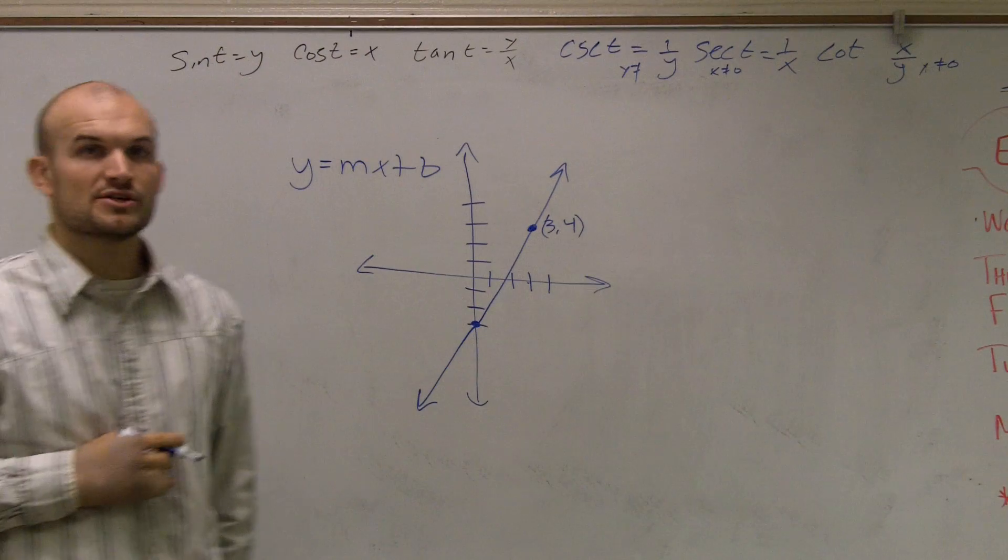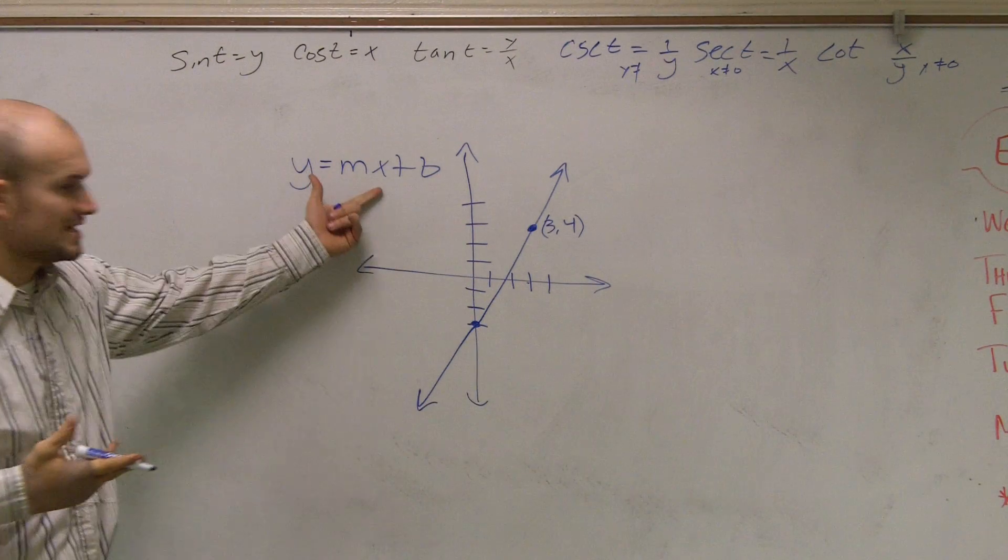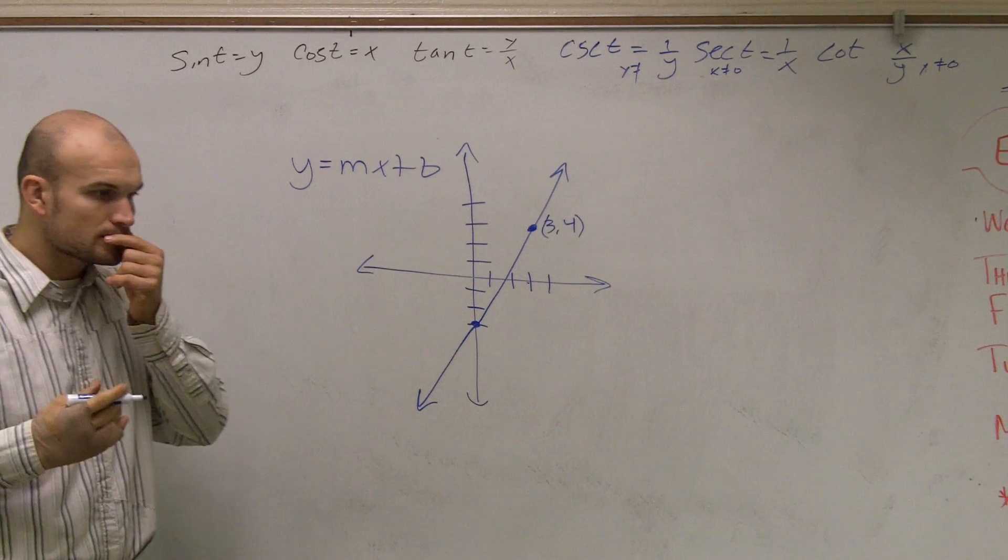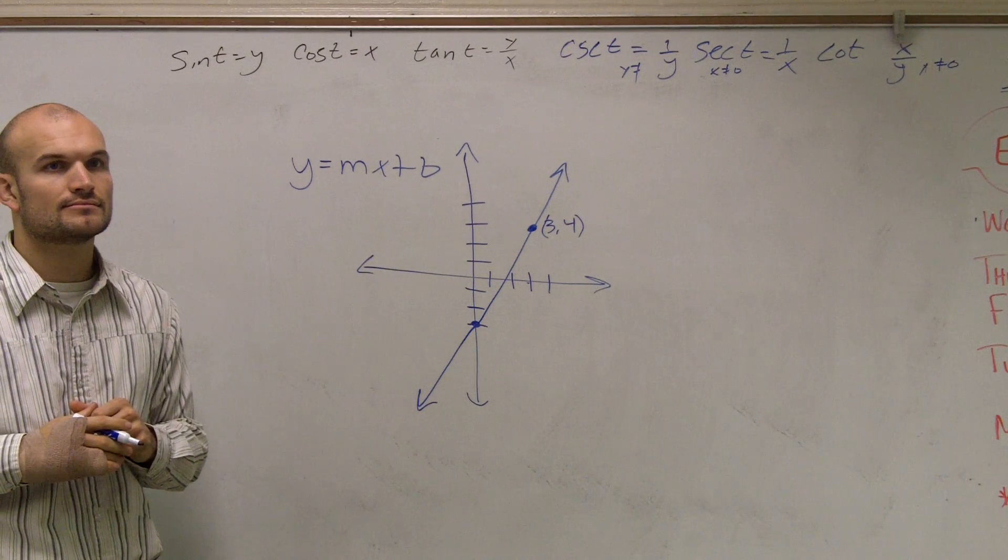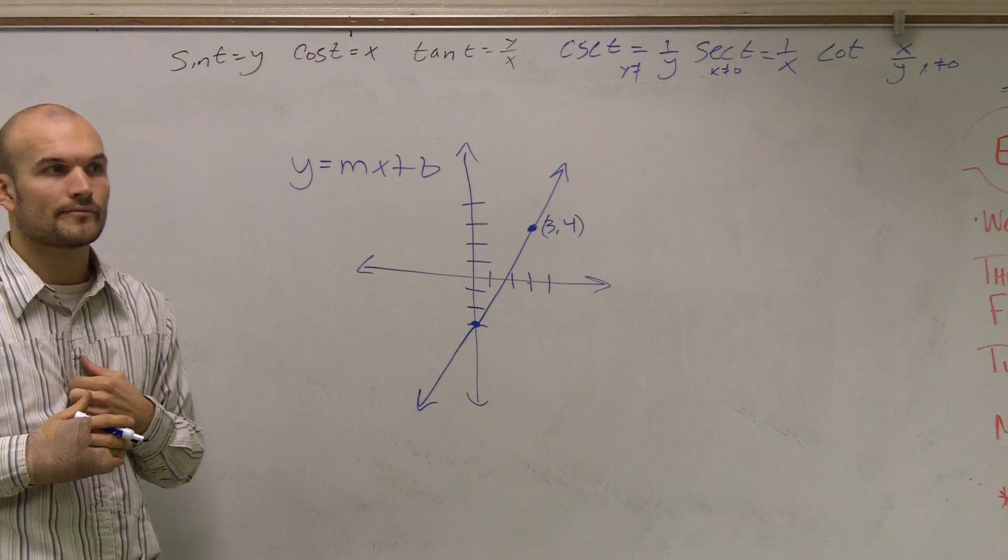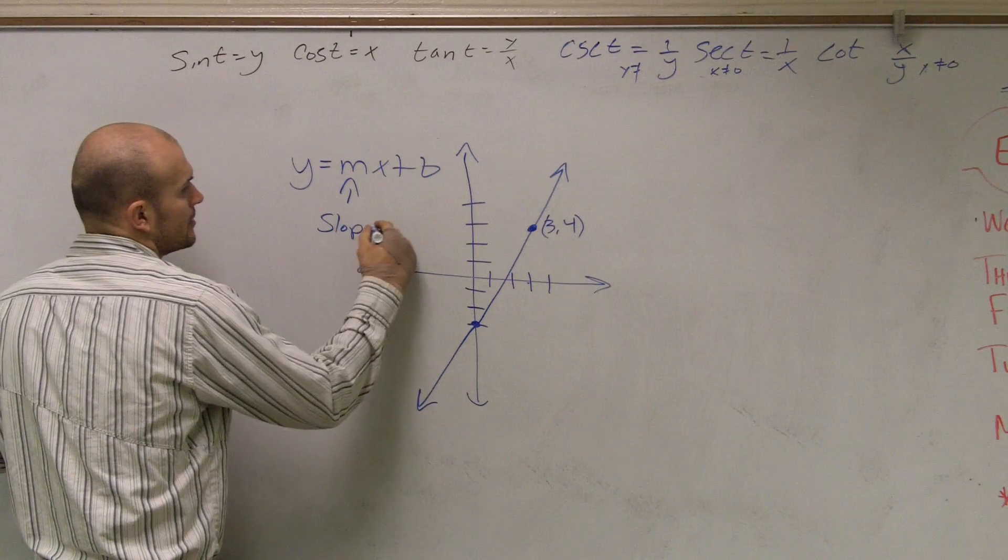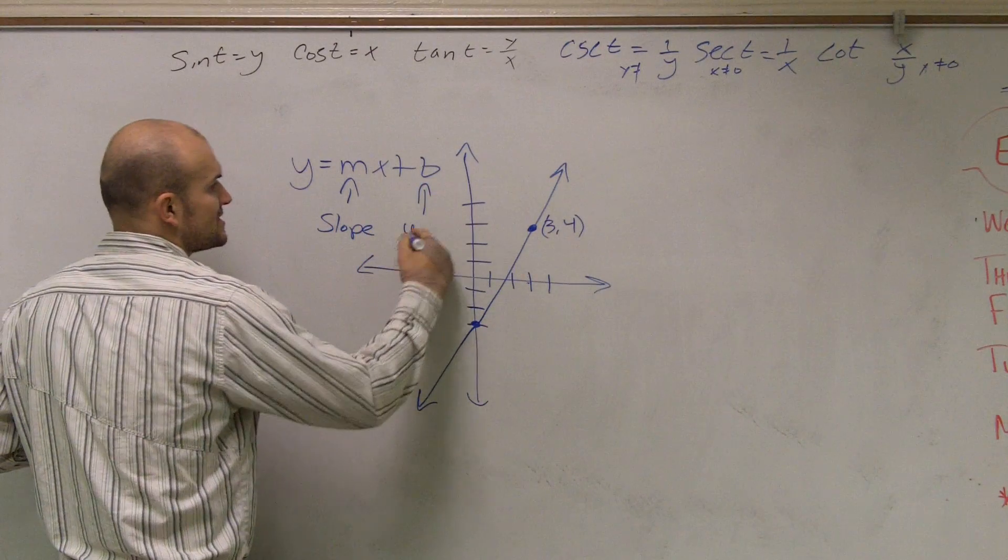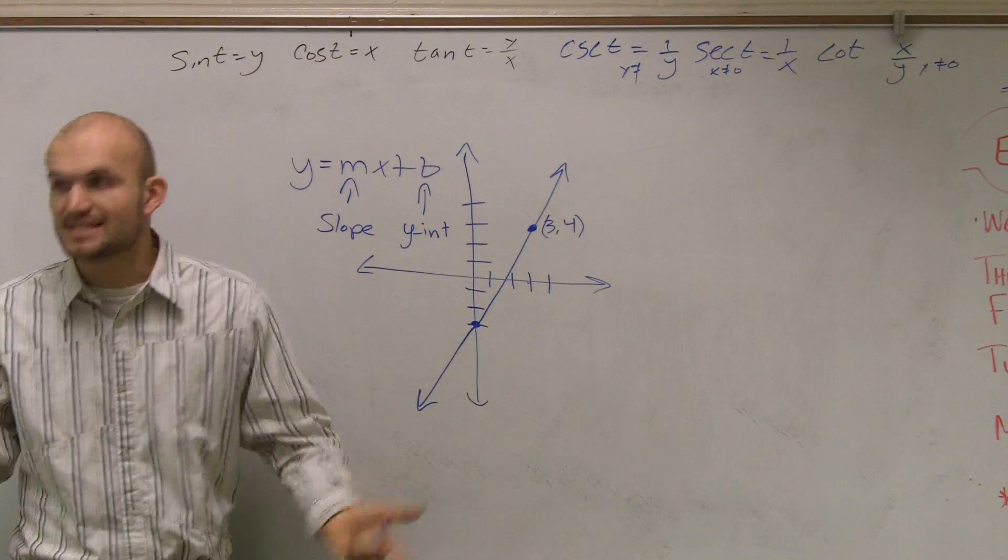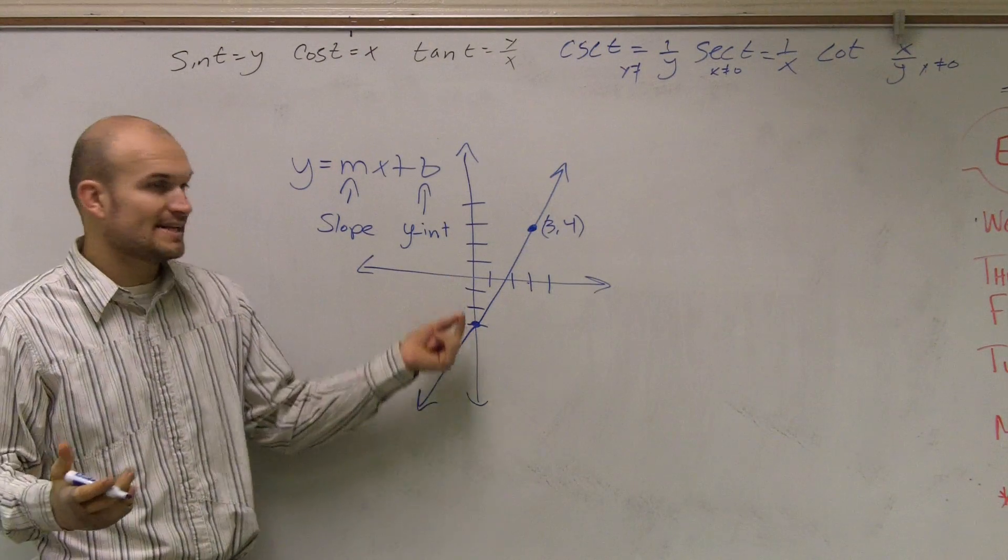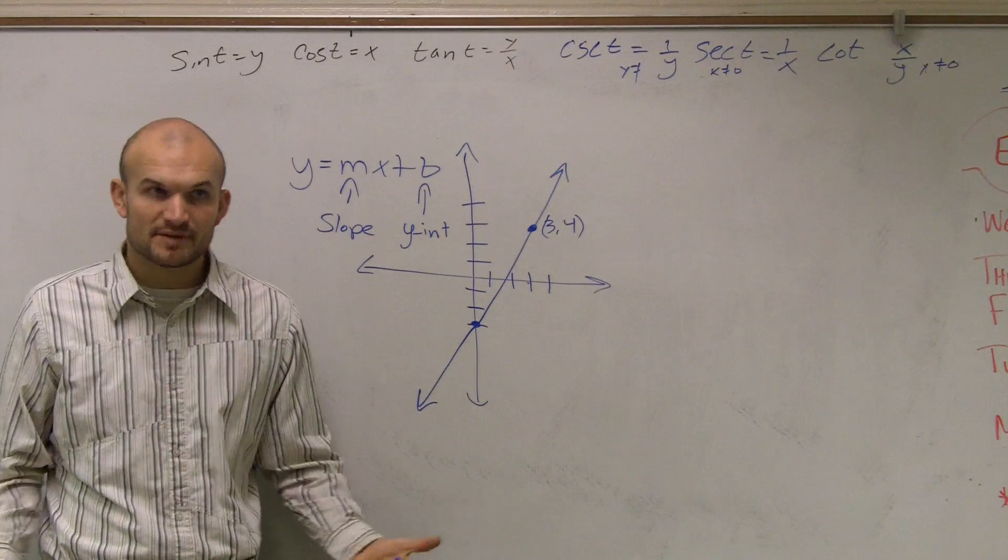And this is what we call slope intercept form. Alright, so if they ask you to put something in slope intercept form, this is the form that they're going to use. And the reason why we call it slope intercept form is because m represents our slope and b represents our y-intercept. So we've already spent extensive amount of time finding the slope of a line and also finding the y-intercept of a line.